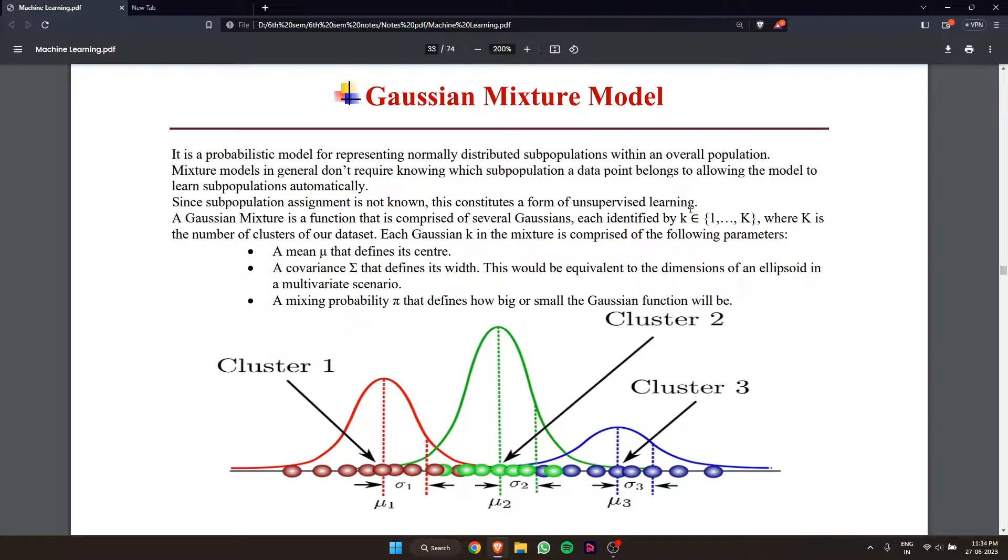A Gaussian mixture is a function that is comprised of several Gaussians, identified by k belonging from 1 to K, where K is the number of clusters in our dataset. Each Gaussian k in the mixture is comprised of the following parameters.